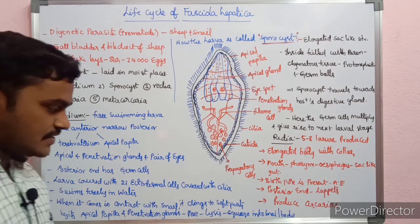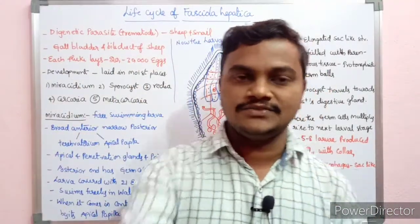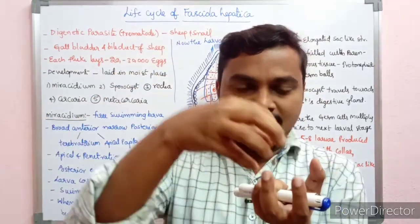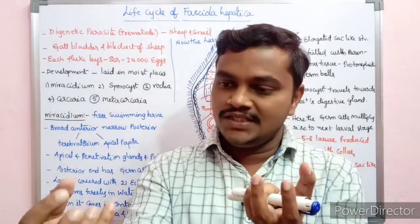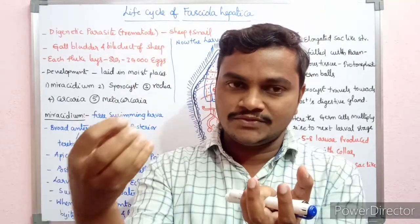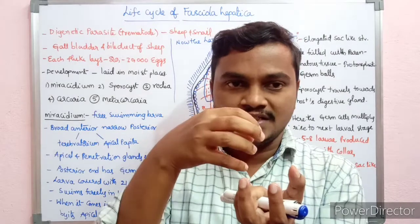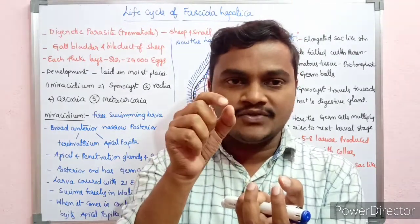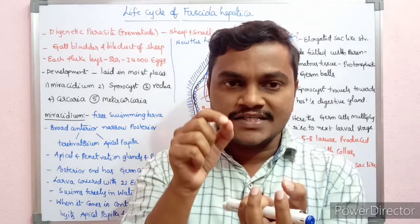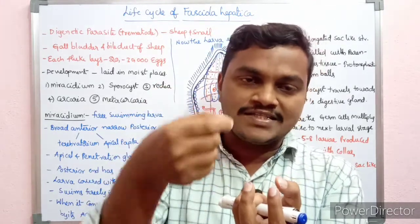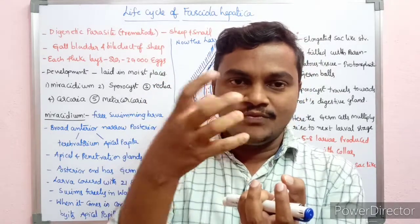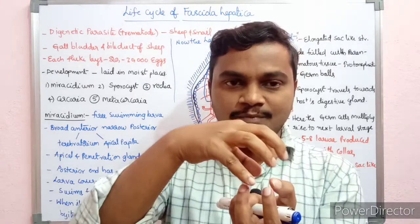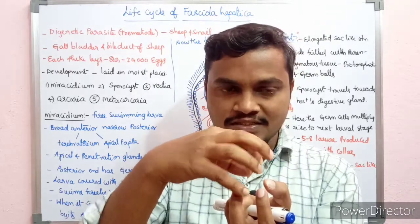When it comes in contact with the snail, which is the intermediate host, the Miracidium penetrates the soft body parts in the mantle. Apical gland secretions help penetrate the soft parts.